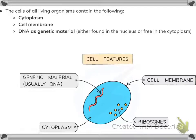Cells contain cytoplasm, cell membrane, and DNA as genetic material. Cell features include: cell membrane, ribosomes, cytoplasm, and genetic material (DNA). You need to learn the labelling for these diagrams.